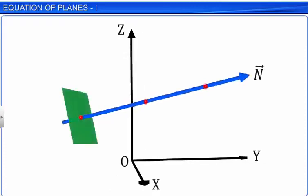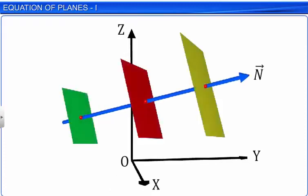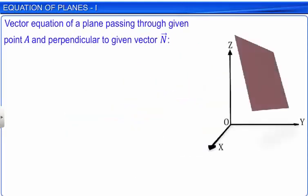There are an infinite number of planes perpendicular to a given vector n in space. However, only one unique plane perpendicular to vector n can pass through a given point A. Let us find the vector equation of a plane passing through a given point A and perpendicular to a given vector n.